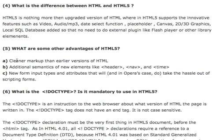HTML5 is an upgraded version of HTML 4.01, also known as XHTML, that supports innovative features such as video, audio, MP3, the date function, placeholder, canvas, 2D and 3D graphics, and local SQL databases. Because of this, we do not need any external plugins like Adobe Flash Player or other library elements.